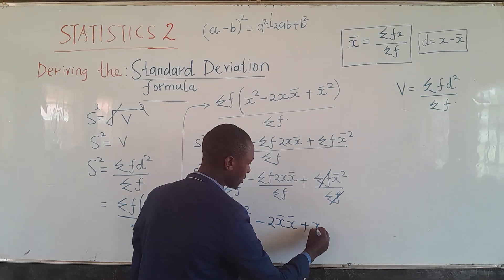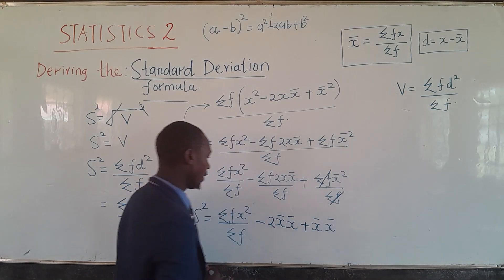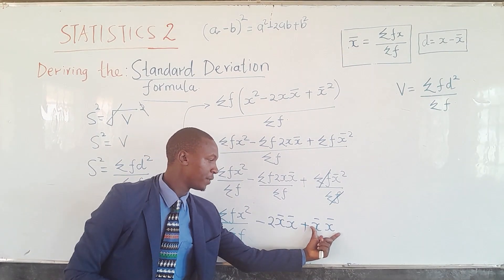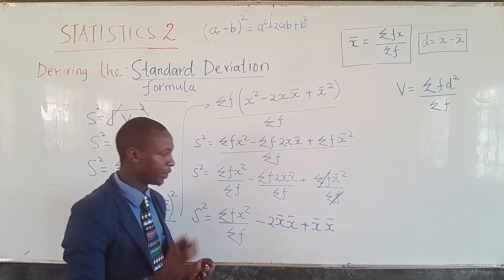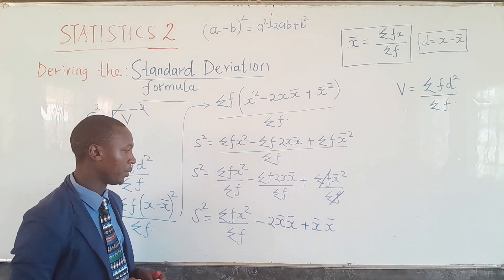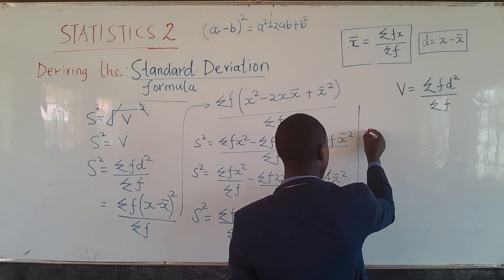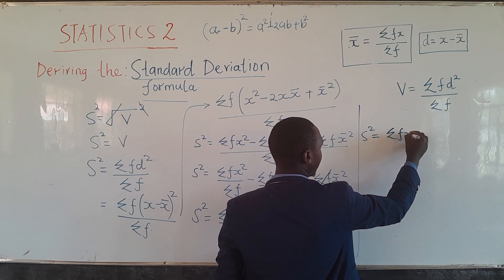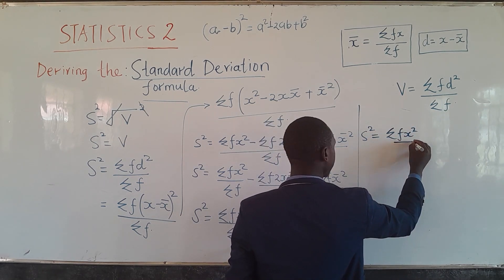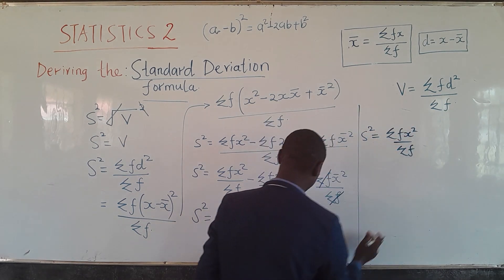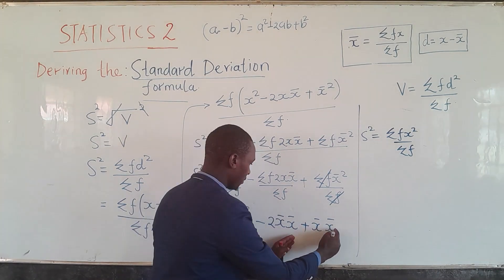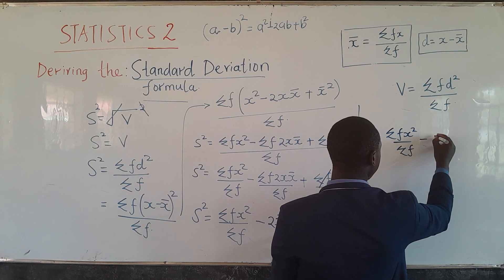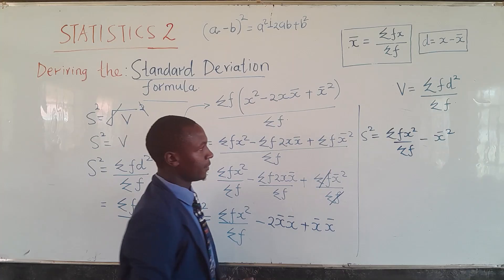We now have two of x-bar squared subtracting and one x-bar squared adding. Two minus one gives us one, so we are left with: s² equals summation of fx²/Σf minus x-bar².